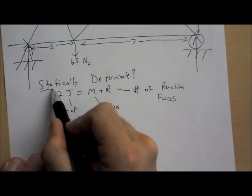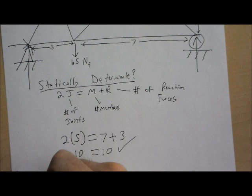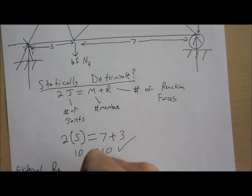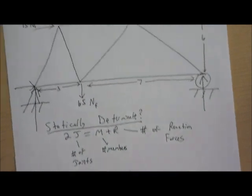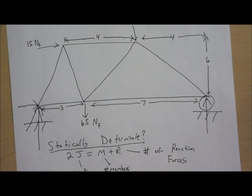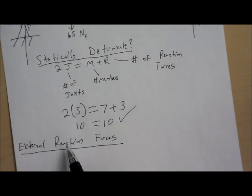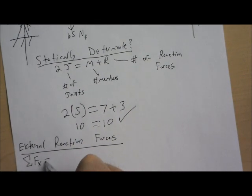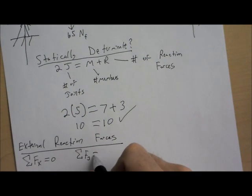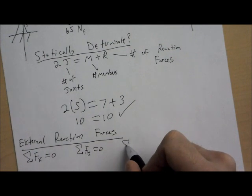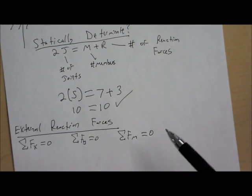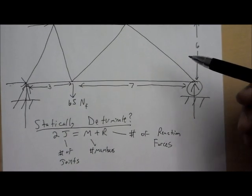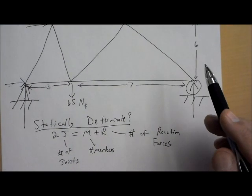So the next thing that you're going to do after determining whether it's statically determinate is solve to find the external reaction forces. We already know the original action forces. That's the 100 newtons, 15 newtons, and 65 newtons. We need to find what are the reaction forces from the pin and the roller. And we're going to use three formulas for external reaction forces. The sum of the forces in the x direction, those have to equal zero. The sum of the forces in the y direction also should equal zero. And the sum of the forces of the moment should equal zero as well. And they all equal zero because we assume from the very beginning that the truss is at static equilibrium. That it's not moving. Or I suppose it could be moving at a constant velocity.